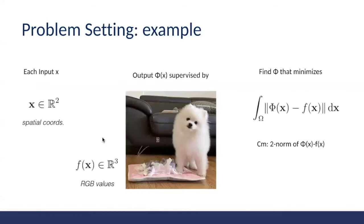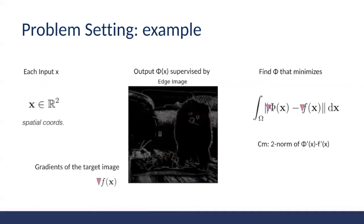Here are some concrete examples. For example, we might want to represent an RGB image using a neural network — we want to find phi of x such that for each spatial coordinate x, phi of x equals the RGB value at that location. The constraint is simply the difference between phi of x and f of x. The constraint can also involve gradients, such that the derivatives of the implicit representation match the gradient of the image being modeled.